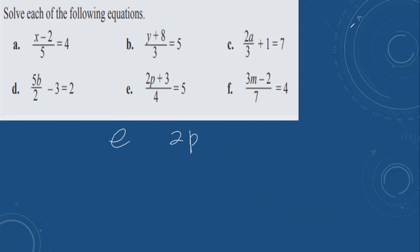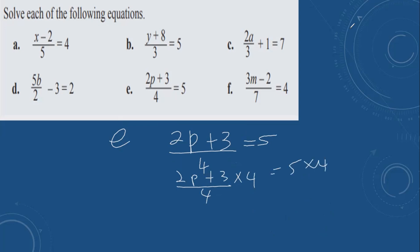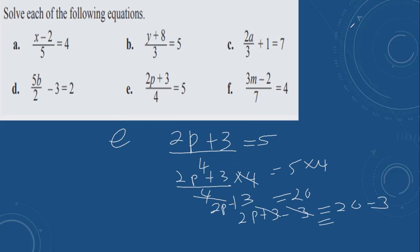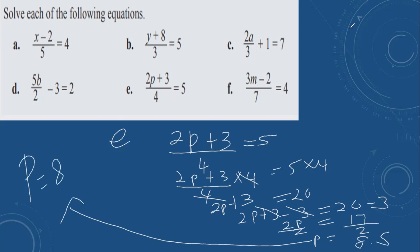Then e: (2b plus 3) over 4 equals 5. Multiply both sides by 4. These cancel, giving 2b plus 3 equals 20. Do the opposite of plus 3: minus 3 on both sides. These cancel. 20 minus 3 is 17. 2b equals 17. Divide by 2. b is equal to 8.5.